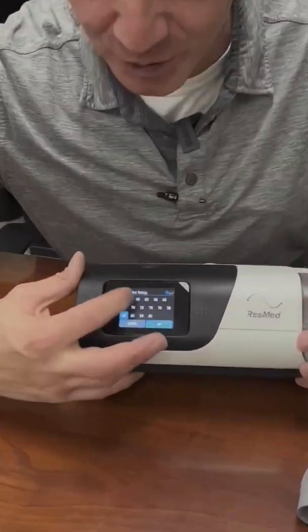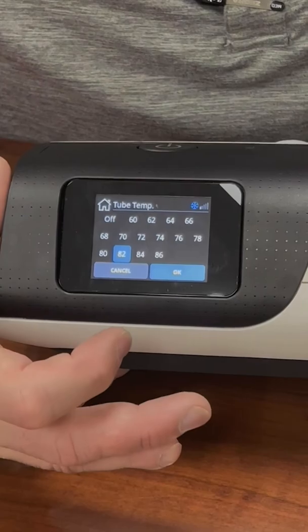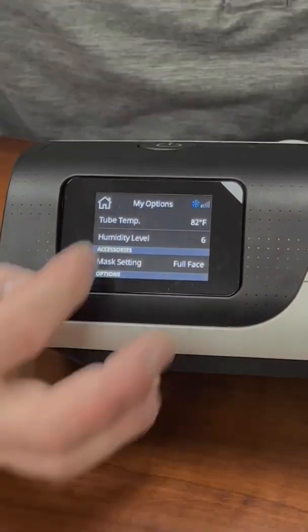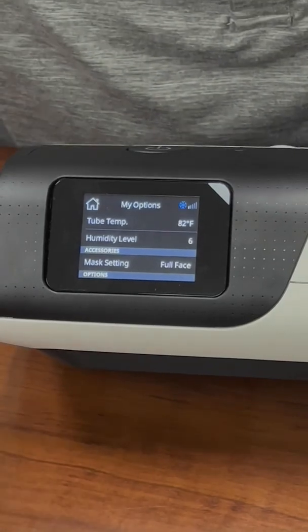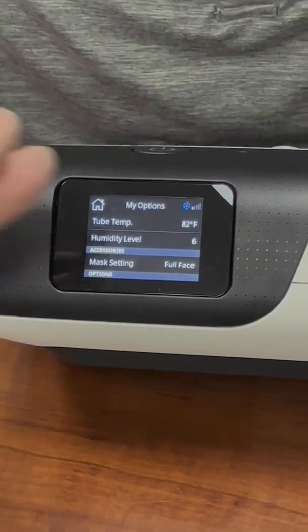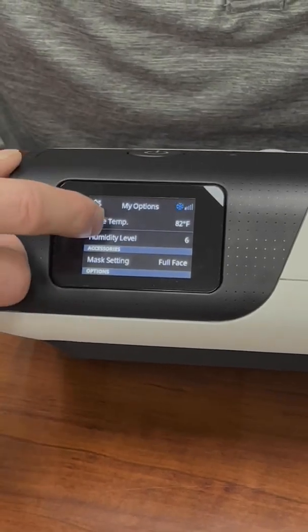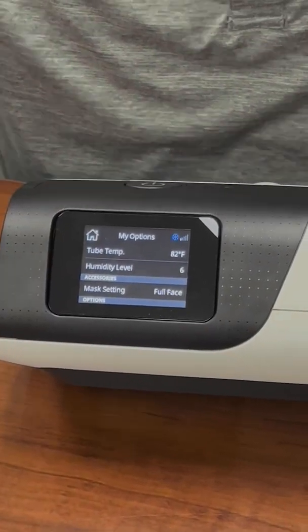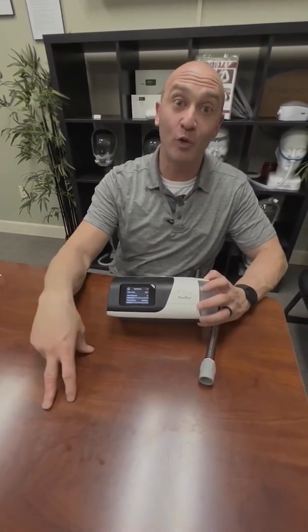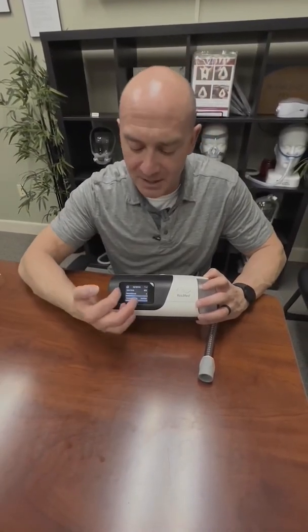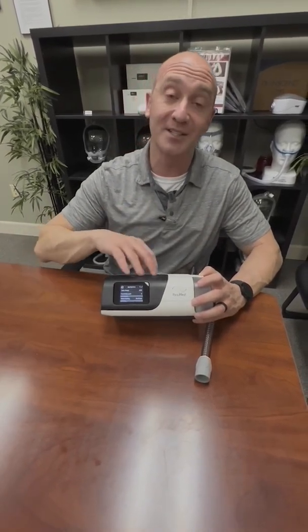But if you do want to get a little bit more humidity, you can go up to 80, and that's keeping that tube warmer, so you're getting less opportunity to have condensation in there. Usually what I'll tell people is, if you're getting dry and you've got this set, increase your humidity level, but then also increase your tube temperature by either 2 or 4 degrees.